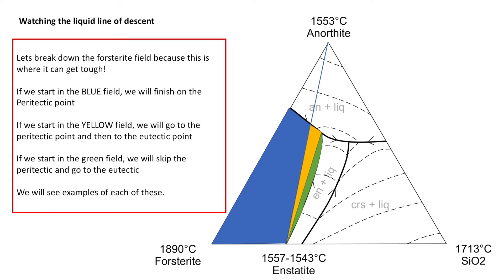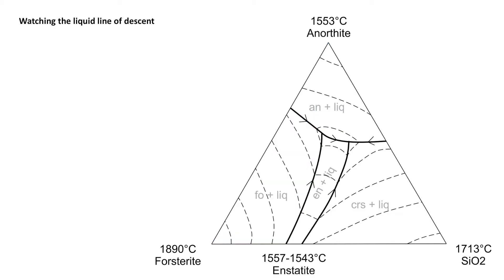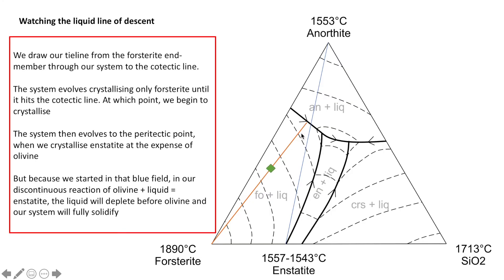I'm going to show you how this works in the following three examples. If we start with a system in that blue field, we draw our line to show that it is to the left of that line. We then draw our line through the system and through the end member. Our system is going to evolve towards that cotectic between forsterite and anorthite via this line, crystallising purely forsterite.